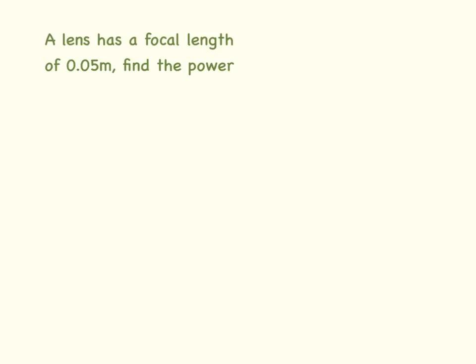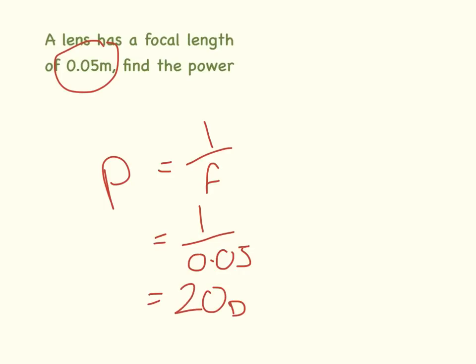So here our lens has a focal length of 0.05 metres. Power equals 1 over focal length, so that equals 1 divided by 0.05. So the power of this lens is 20 diopteras.